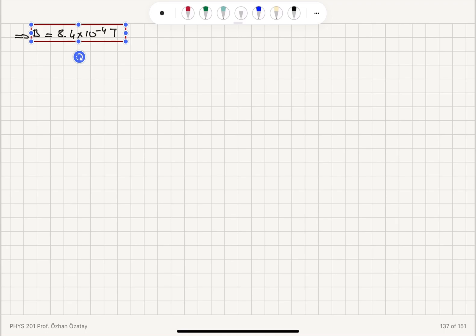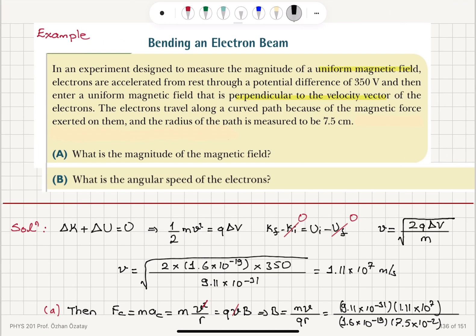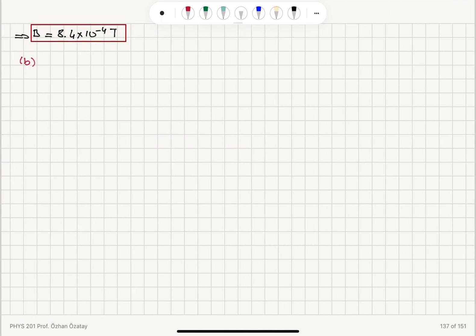Now, we can calculate the angular speed of the electrons because the tangential speed is related to the angular speed. v is equal to omega r, or omega is equal to v divided by r. We already know what v is. It is 1.11 times 10 to 7 meters per second. The radius was 7.5 centimeters, 7.5 times 10 to minus 2 meters. So, we obtain the angular speed 1.48 times 10 to 8 radians per second.